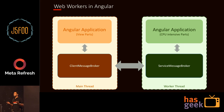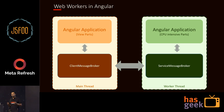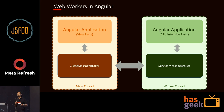Essentially it's divided into two parts: you have the browser thread or main thread, and a web worker thread running separately. The view part of the Angular app is rendered in the browser, and the CPU-intensive part runs on the web worker thread. They use something called a client message broker to handle communication between both, because web workers cannot directly talk to the DOM.